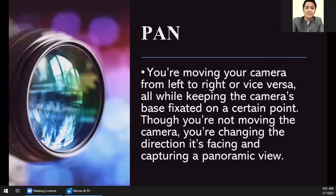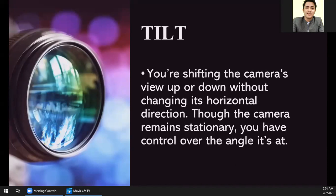The first and most generic camera movement is pan. Pan and tilt are often confused, so it's important to know the difference. When you pan, the movement is left to right — this is called panning. When you tilt, you're shifting the camera's view up or down. So: tilt is up or down, pan is left or right. People often say 'pan' when they mean 'tilt' — if the movement is up and down, that's tilting, not panning.